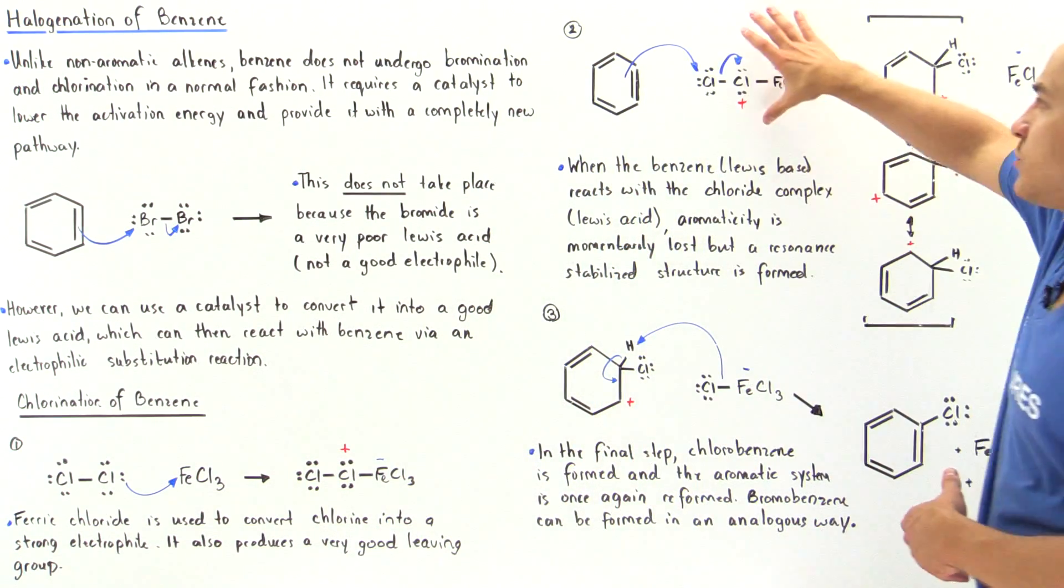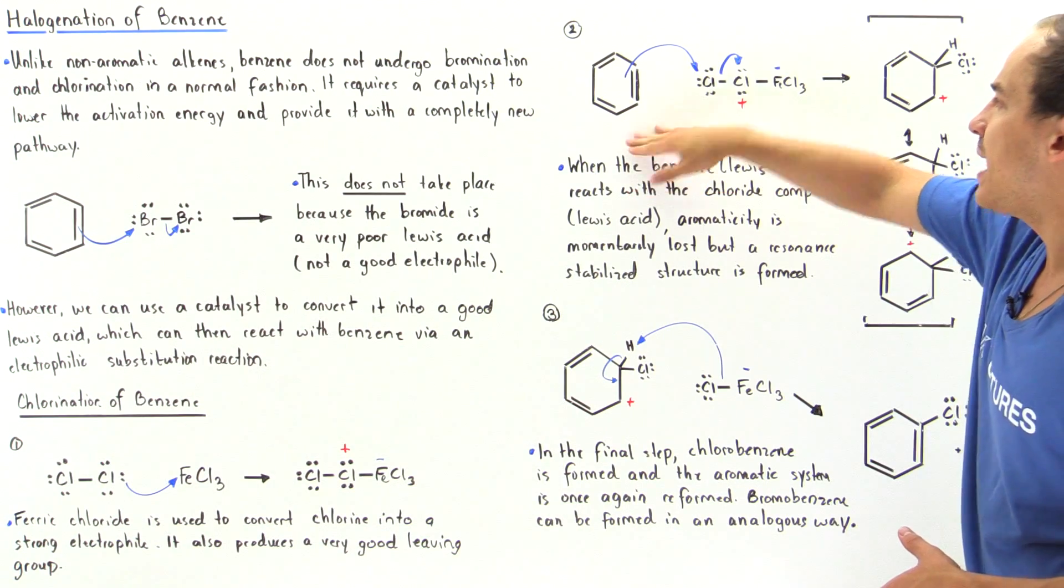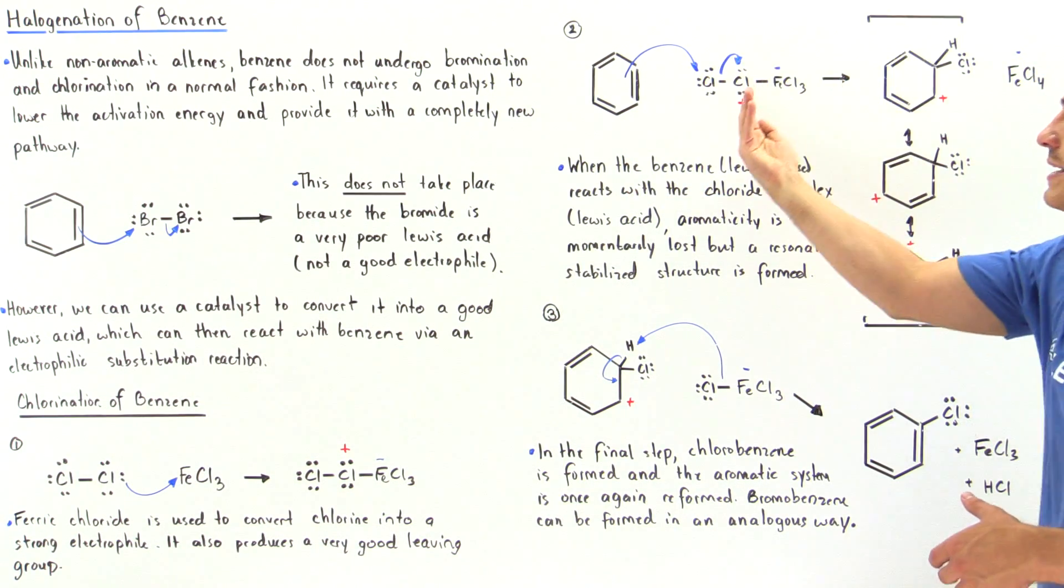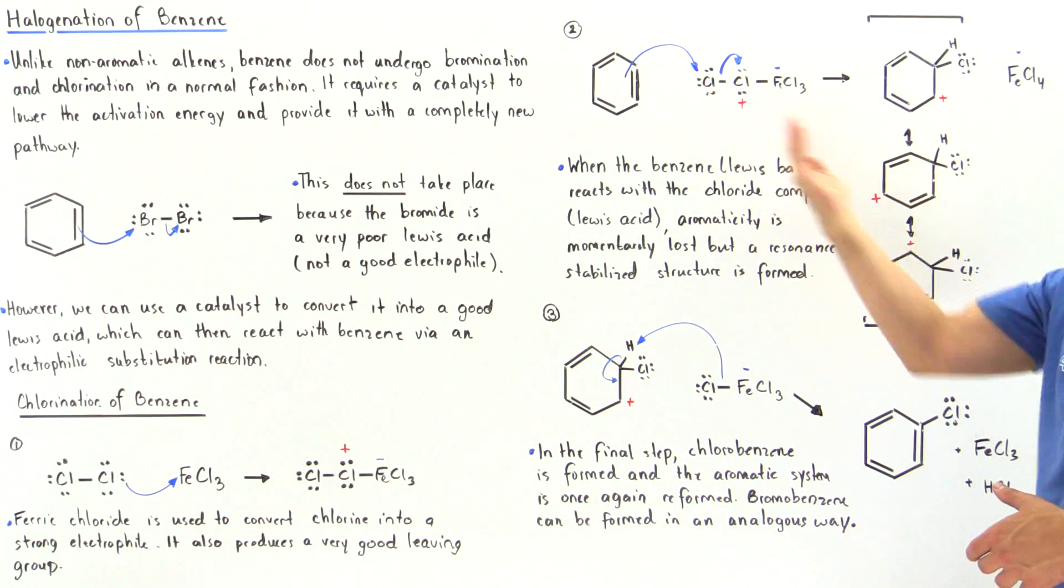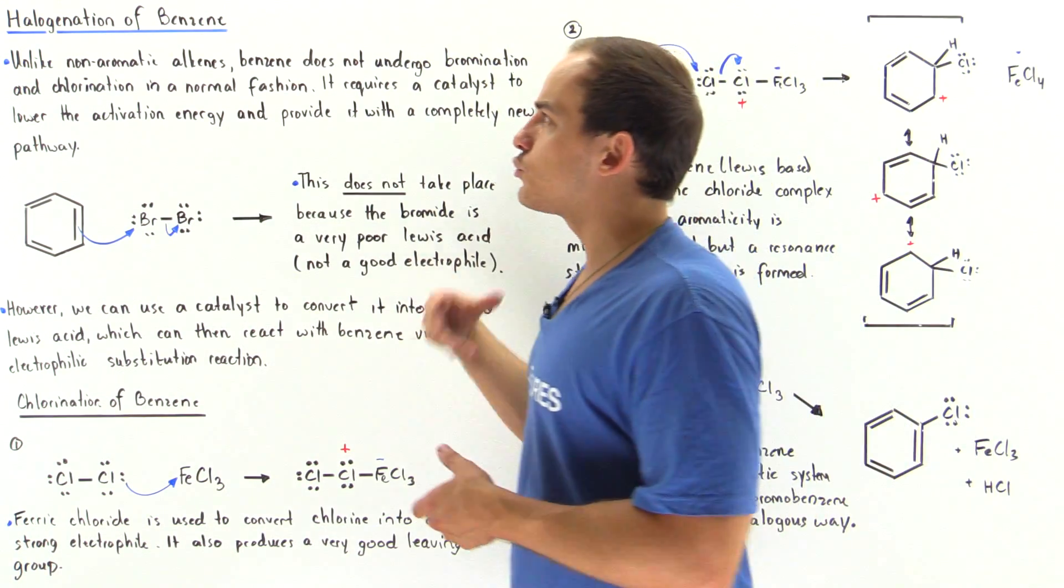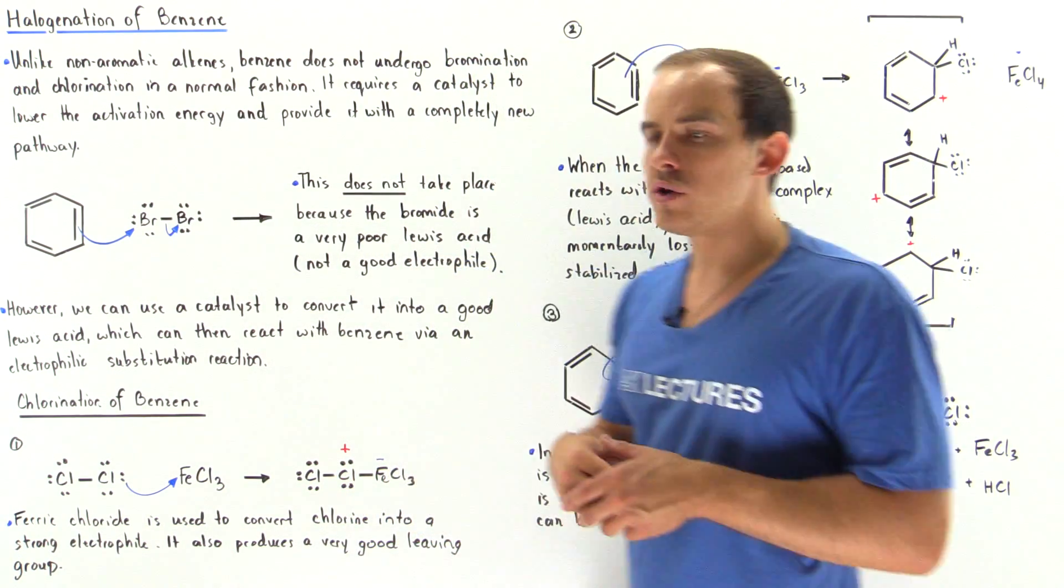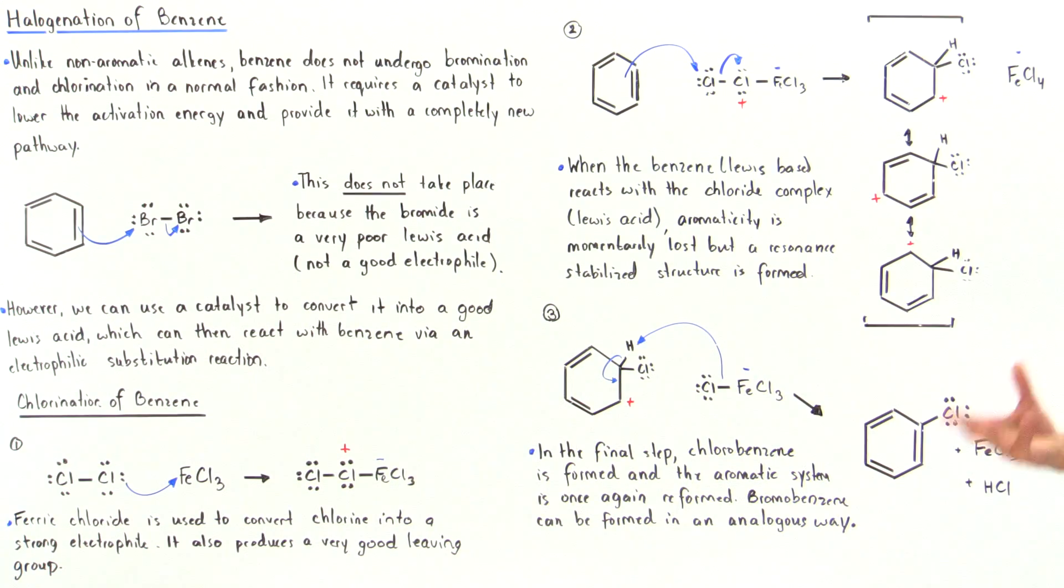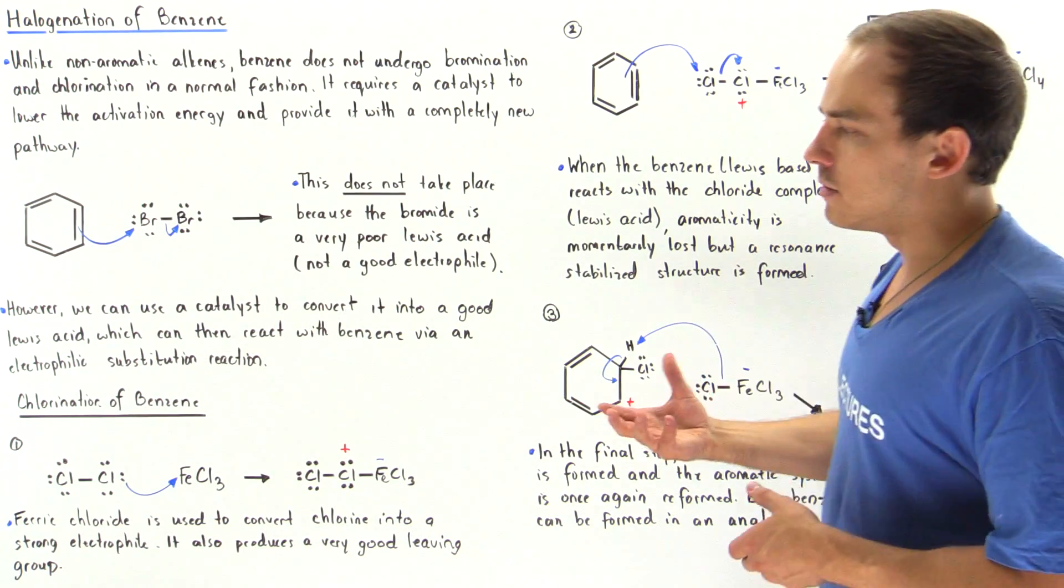So now this can act as a good Lewis acid, and it reacts with our Lewis base. This good leaving group is basically kicked off, detached. This is the halogenation reaction of benzene. Notice bromination takes place in a very similar fashion.